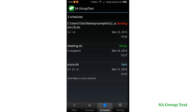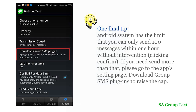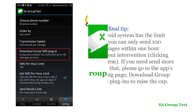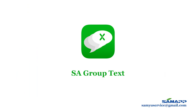Those are all the basic operations of SA Group Text. One final tip: Android has a limit that you can only send 100 messages within 1 hour without intervention. If you need to send more than 100 messages per hour, please go to the app settings page and find 'Download group SMS plug-in' to raise the cap. If you have any questions or suggestions, please feel free to contact us via email — we're always here to help.